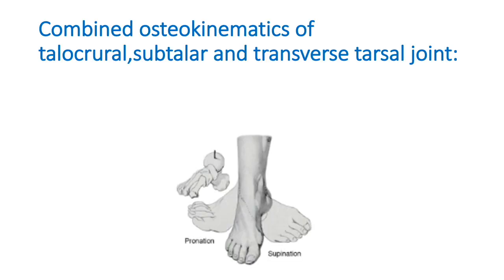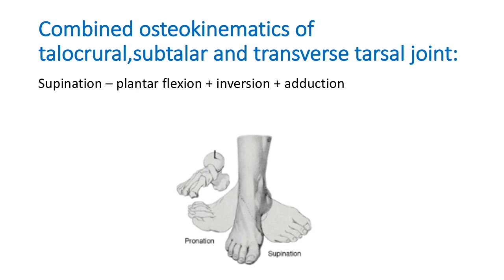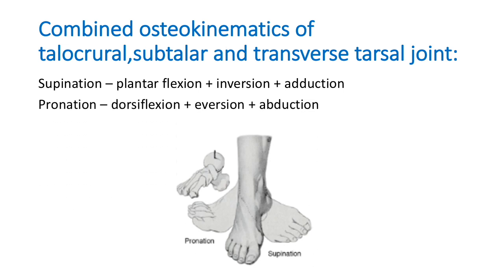Regarding combined osteokinematics of the talocrural, subtalar, and transverse tarsal joints: when the talocrural joint goes into plantar flexion along with inversion at the subtalar joint and adduction at the transverse tarsal joint, it is called supination. It is called pronation when the talocrural joint goes into dorsiflexion, the subtalar joint goes into eversion, and the transverse tarsal joint goes into abduction.